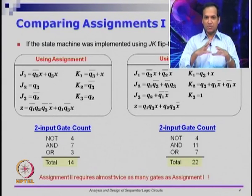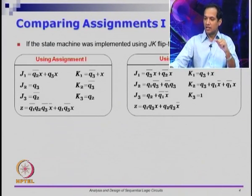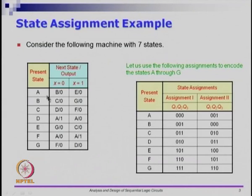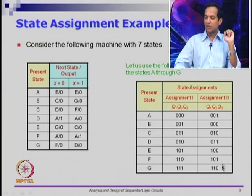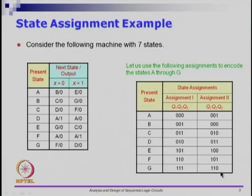You have 14 gates in assignment 1 and 22 gates in assignment 2. By choosing assignment 2 instead of assignment 1, you suddenly have a gate count almost 50 percent greater. The key thing is: coming up with a state machine is one thing, but even after state minimization, the choice of which assignment we make makes a difference in terms of the number of gates. There are 2 things which can change the total number of gates: the state diagram itself and associated minimization, and the state assignment.